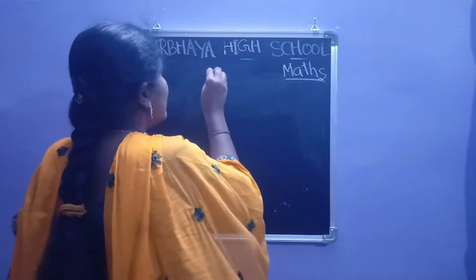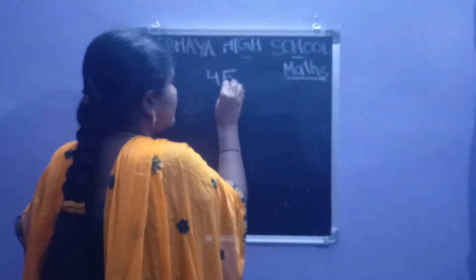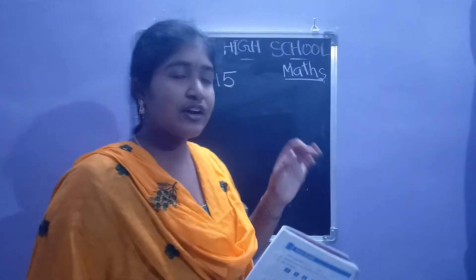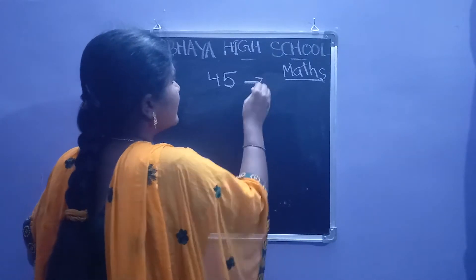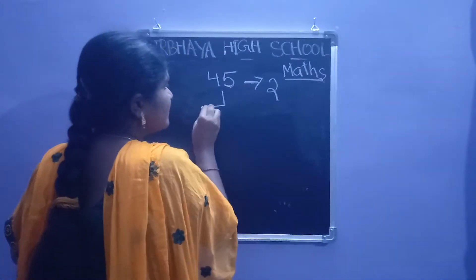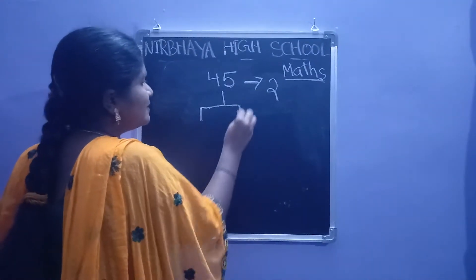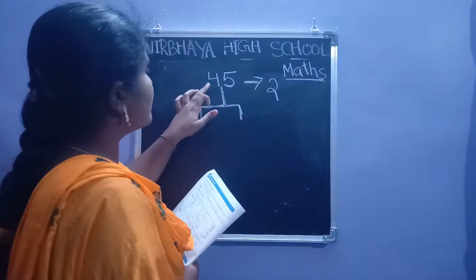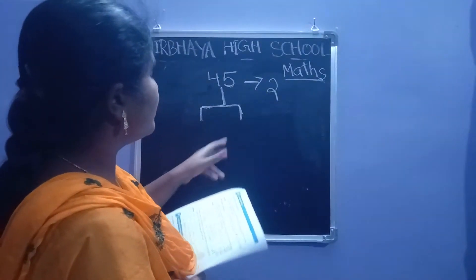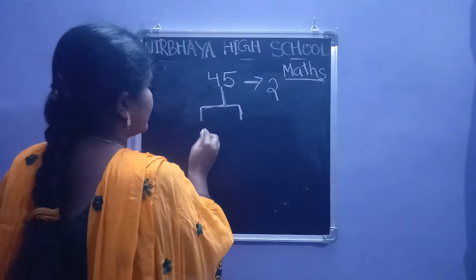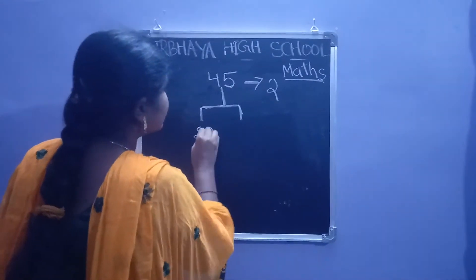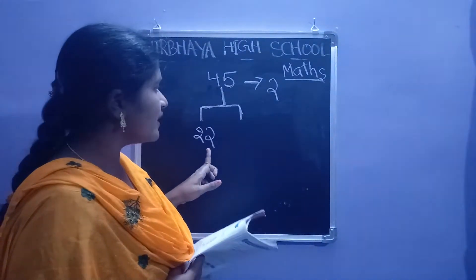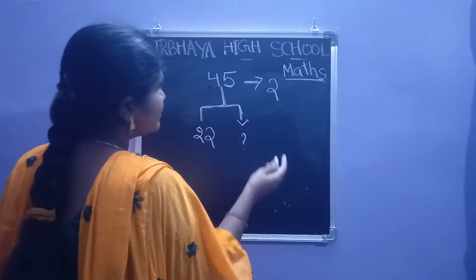Here, children: the total number of students are 45. They are divided into two groups. In one group, 22 students are there. In another group, how many students are there? We have to find the number of students in the other group.